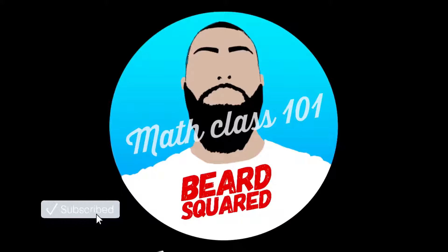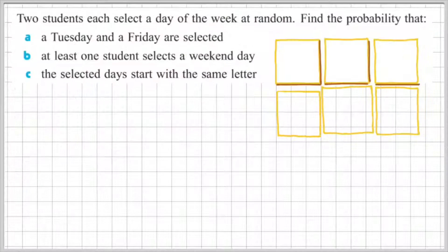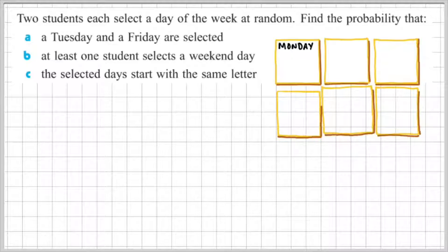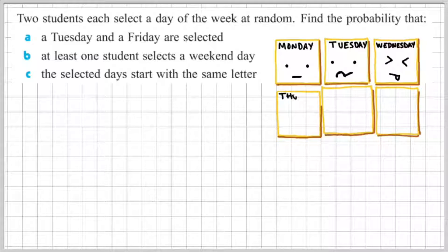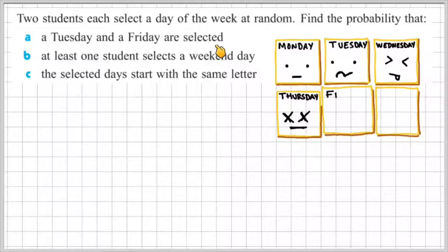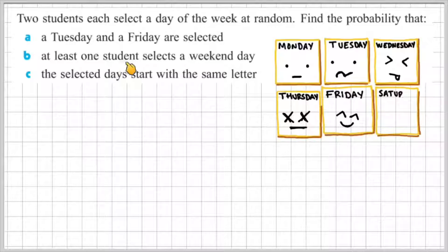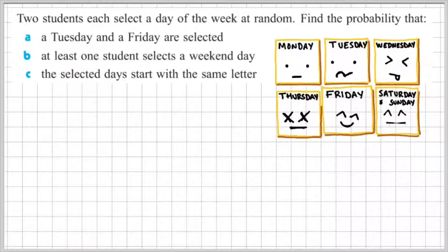Okay, let's do another question and this time you can pause the video and attempt it for yourself. Two students each select a day of the week at random. Find the probability that: a) a Tuesday and a Friday are selected, b) at least one student selects a weekend day, c) the selected days start with the same letter.